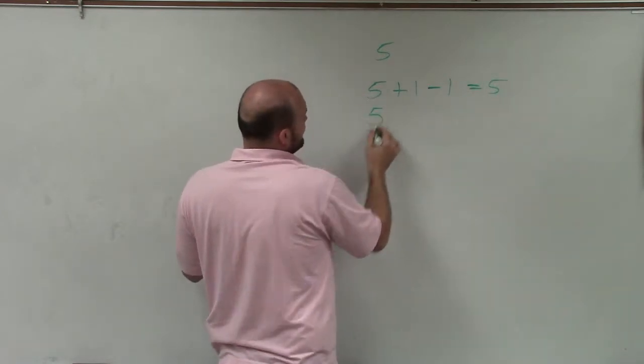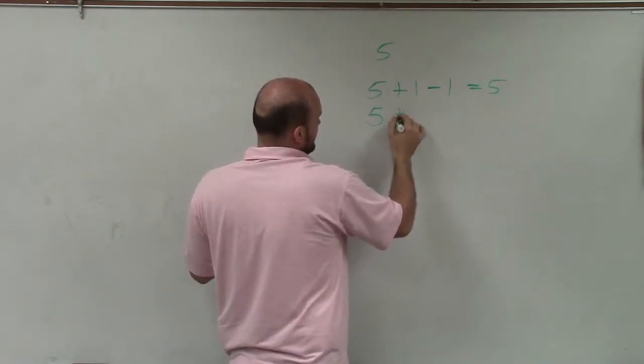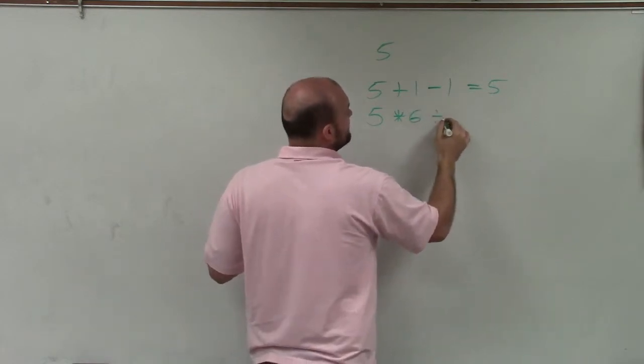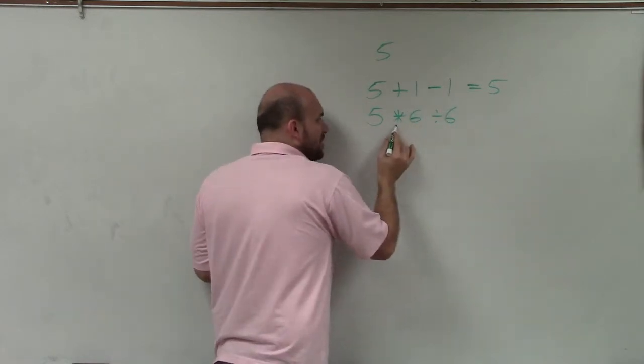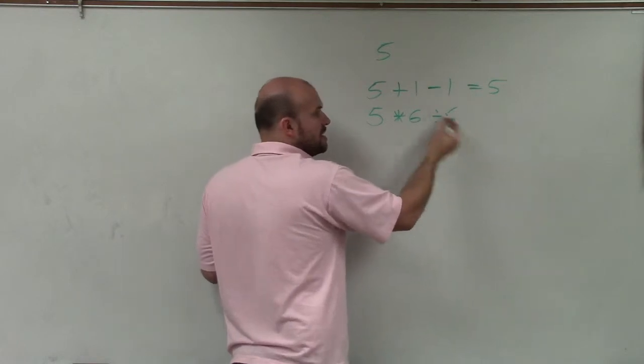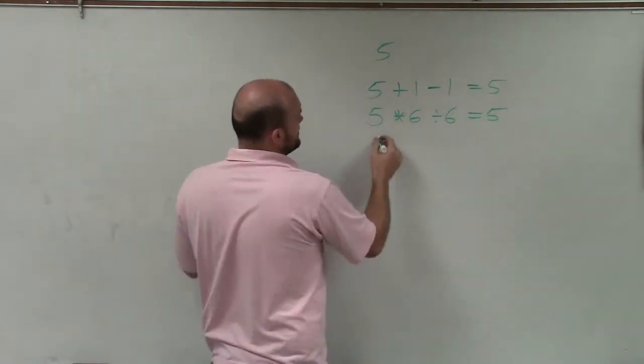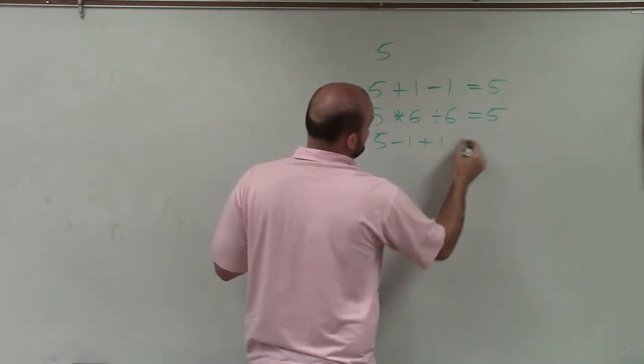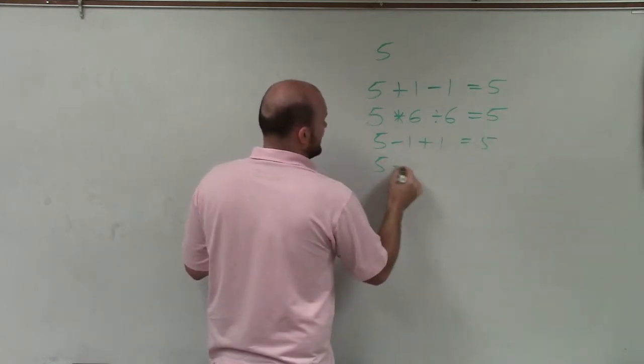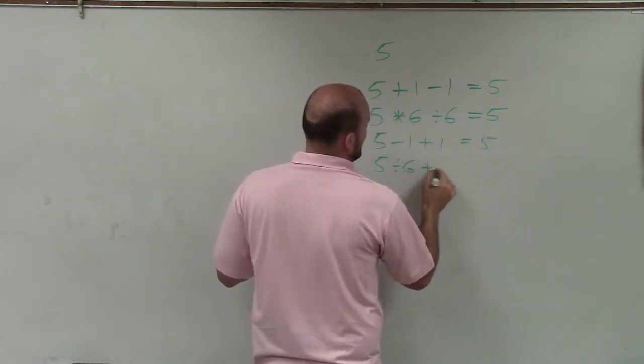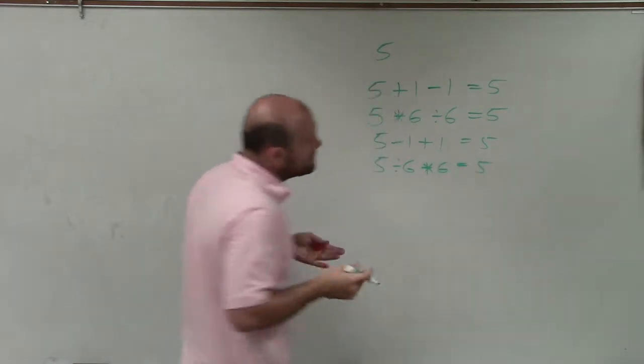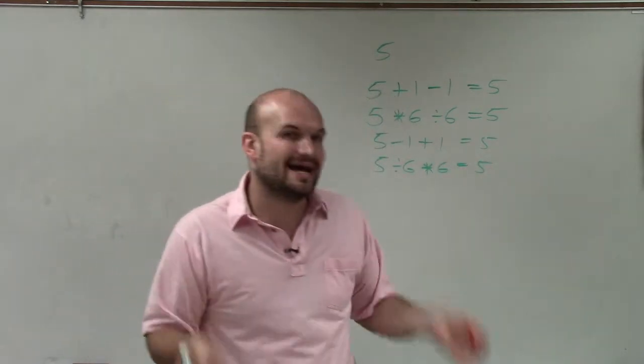Just like if I did 5 times 6, and then divide by 6, multiplication and division are inverses, so it's going to take me back to 5. We could swap these around. I could say 5 minus 1 plus 1 equals 5. 5 divided by 6 times 6 equals 5. So our inverse operations take us back to our element.